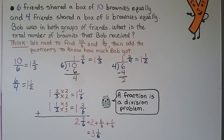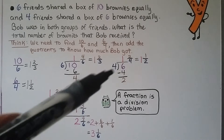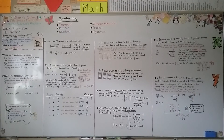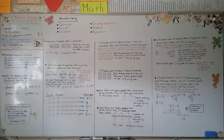Remember, a fraction is a division problem. 10 sixths equals 1 and 2 thirds, and 6 fourths equals 1 and 2 fourths, which simplifies to 1 and 1 half. Our next lesson, 8.4, we're going to talk about fraction and whole number division with related multiplication. I hope to see you there — stay safe, stay strong, and I'll see you next time.